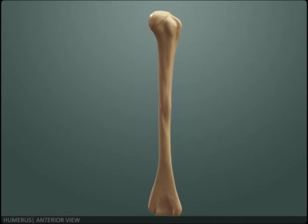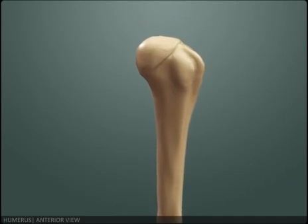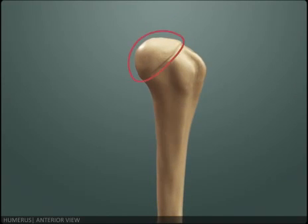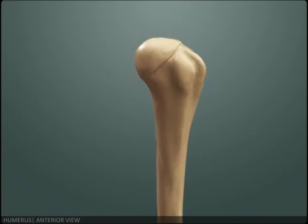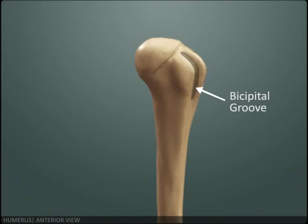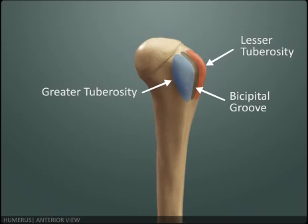This is the humerus. This is the head of the humerus — it is directed up and medially. This is the bicipital or intertubercular groove. It is surrounded by two tuberosities: the lesser tuberosity and the greater tuberosity.